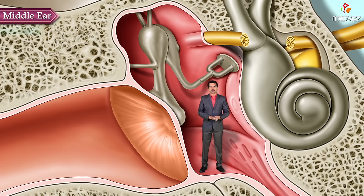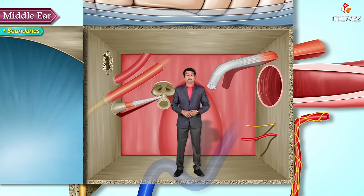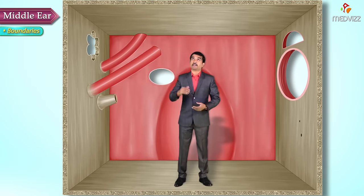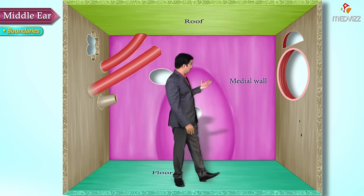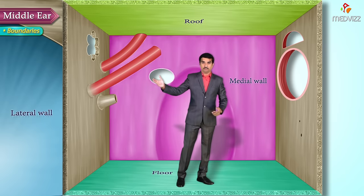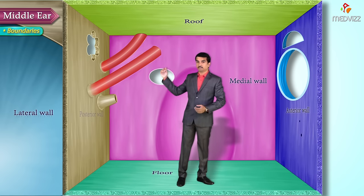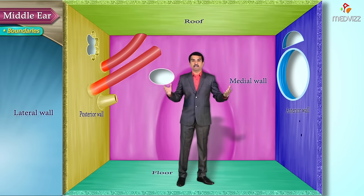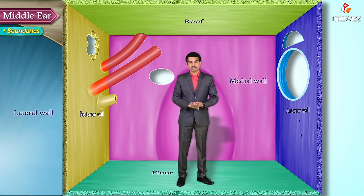Now we shall discuss the boundaries of the middle ear. For better understanding, the middle ear can be visualized as a rectangular box, which has a roof, a floor, a medial wall, a lateral wall formed by the tympanic membrane, an anterior wall, and a posterior wall. The middle ear totally has six walls.